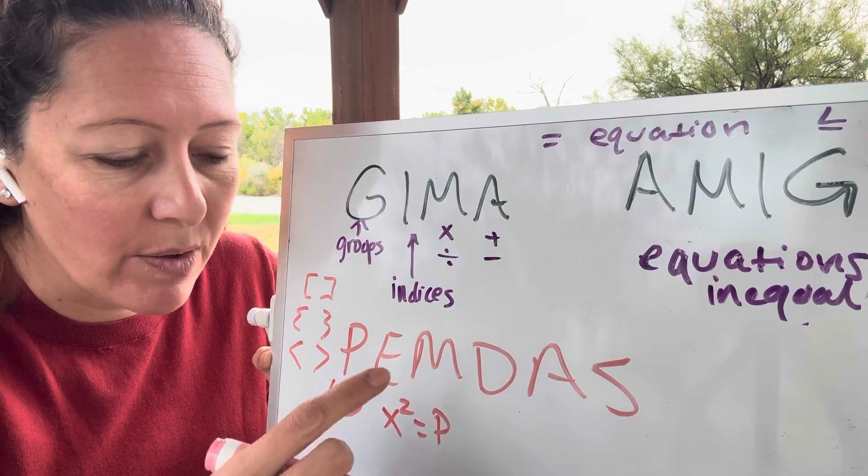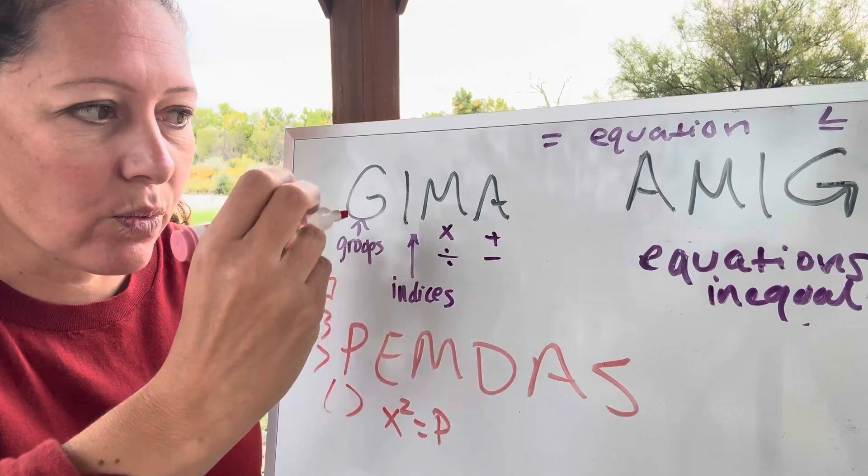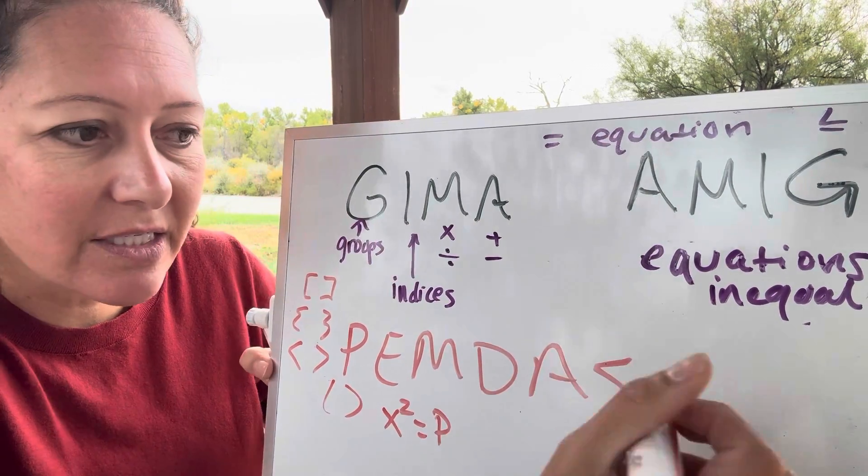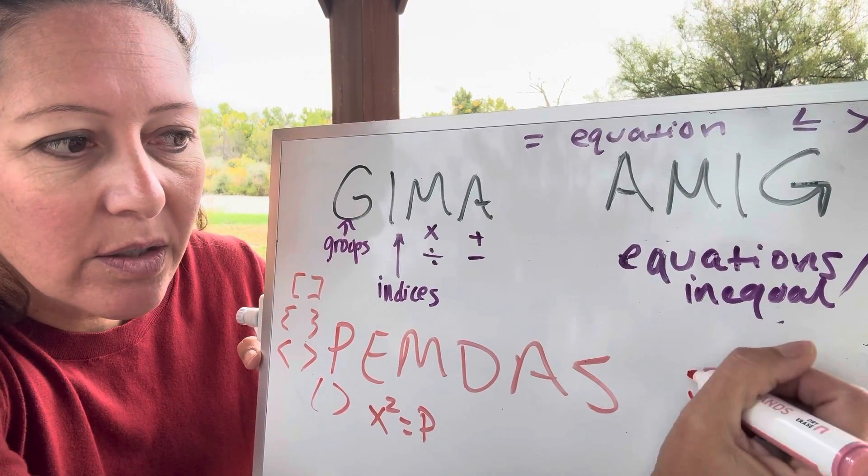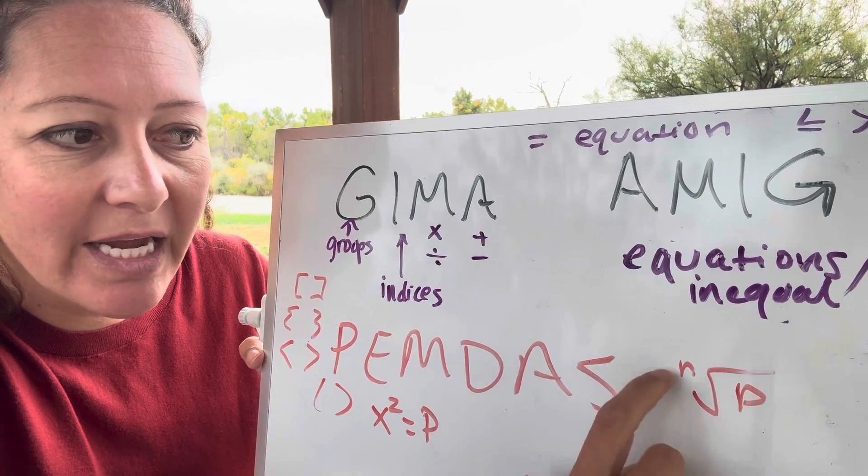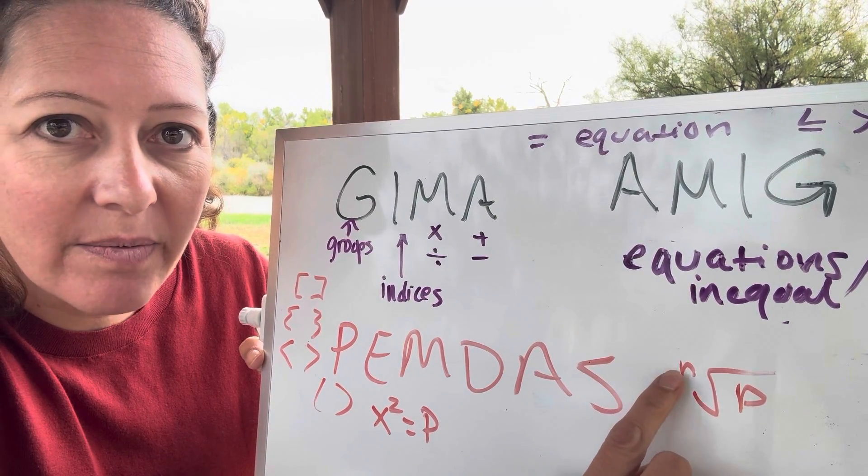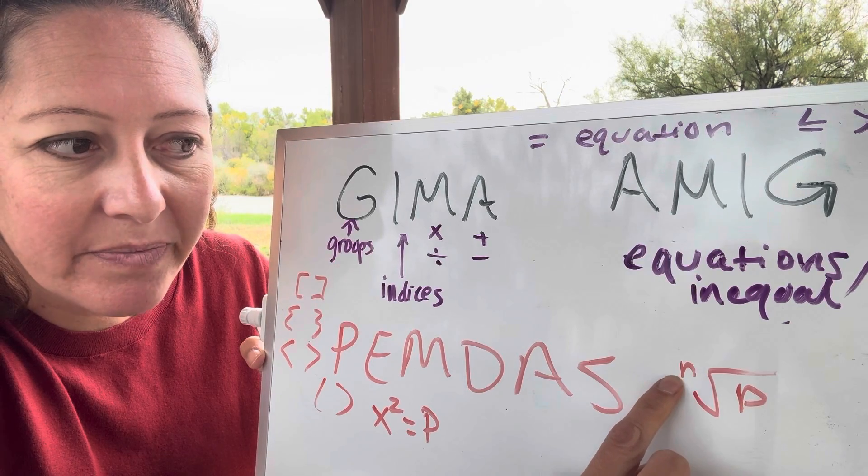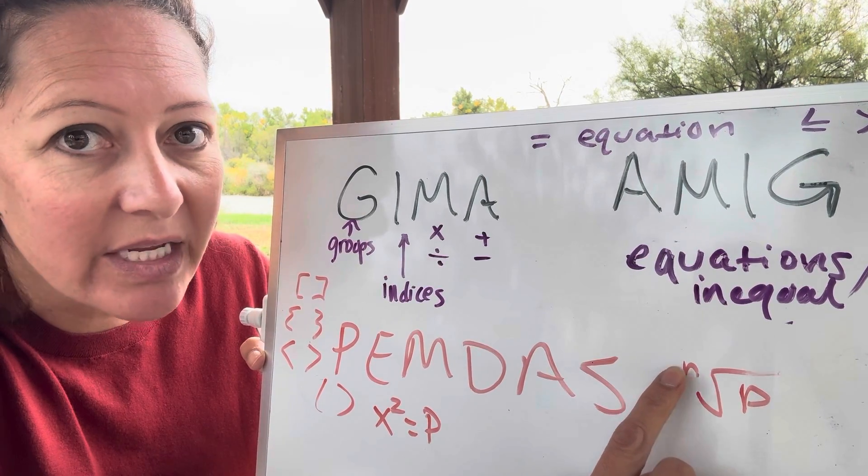That's one example of an exponent. But we could have a root. Let's see. Where do I have space? We can have a root of the power. And that index is also, it's no longer an exponent. It is just an index.